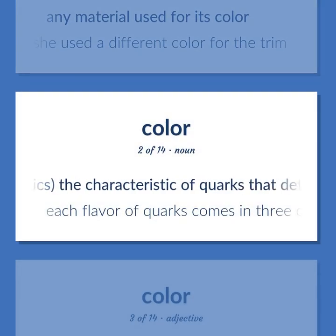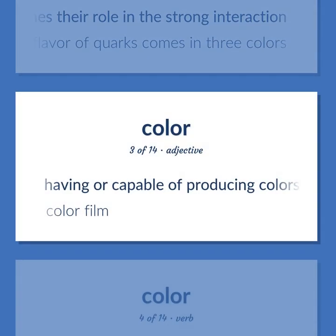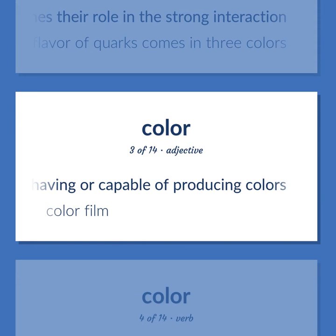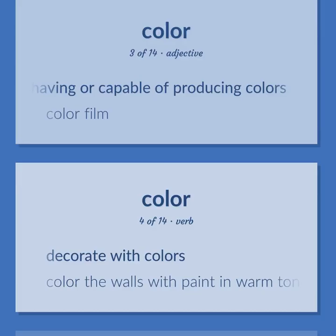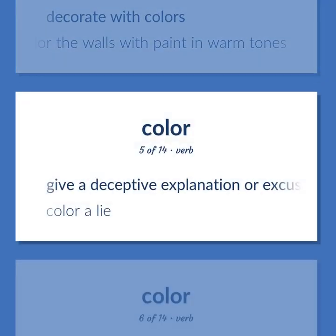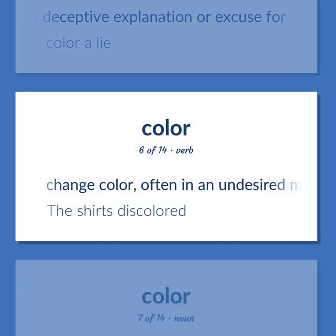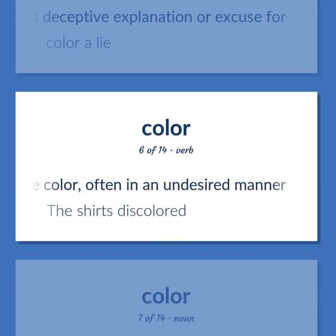Physics: the characteristic of quarks that determines their role in the strong interaction. Each flavor of quarks comes in three colors. Having or capable of producing colors. Color film. Decorate with colors. Color the walls with paint and warm tones. Give a deceptive explanation or excuse for. Color a lie. Change color, often in an undesired manner. The shirt's discolored.